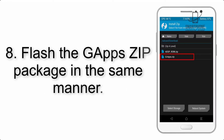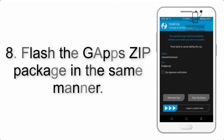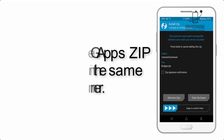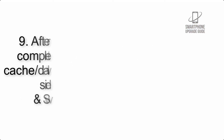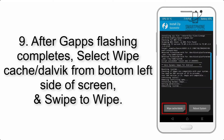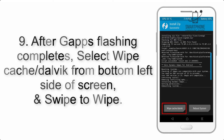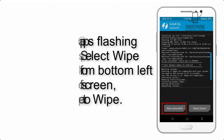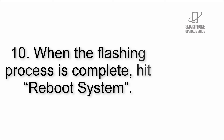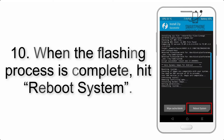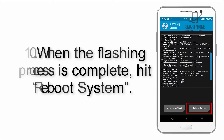Step 8: Flash the GApps zip package in the same manner. Step 9: After GApps flashing completes, select Wipe Cache and Dalvik from the bottom left side of the screen and swipe to wipe. Step 10: When the flashing process is complete, hit Reboot System.